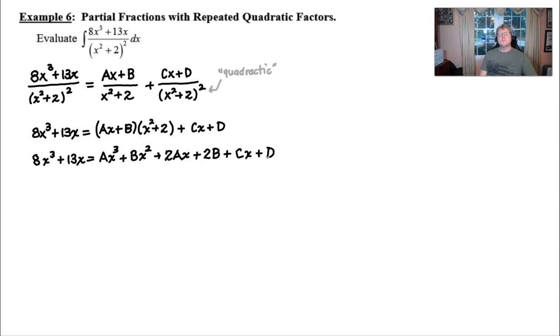Now we start grouping like terms together. You see how this 8x cubed plus 13x has been waiting ever so patiently on the left side. He's wanting to start to match up with like terms on the right side. And so I noticed that there's only one cubic x on the right side, so he's going to be sort of a loner at this particular stage. And we could say the same thing about the x squared term. He's a bit of a loner as well.